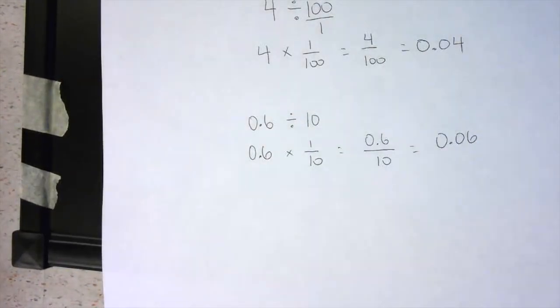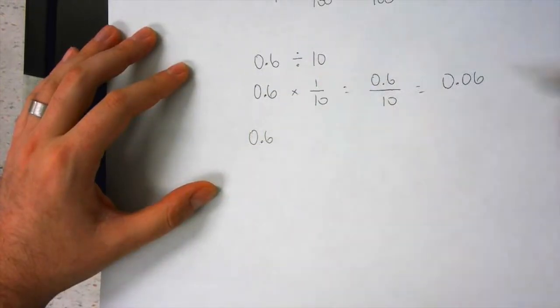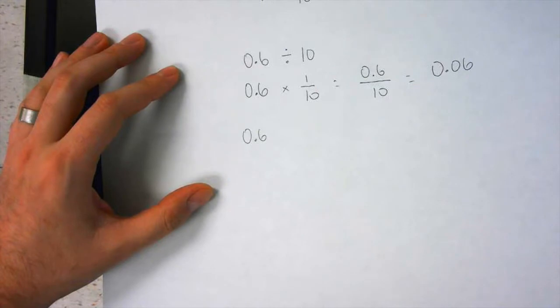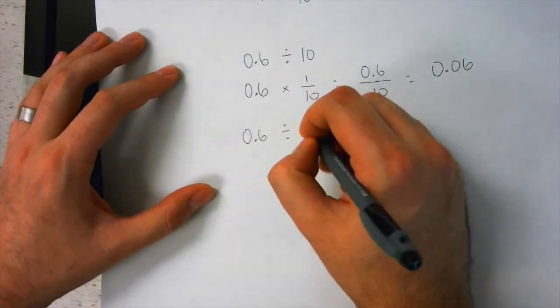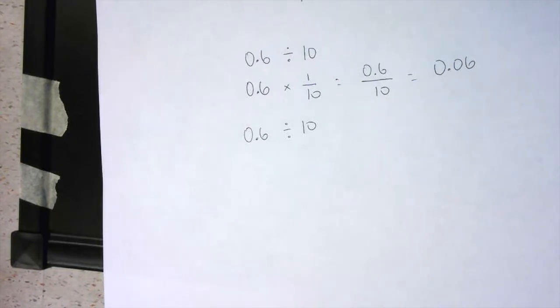Now you must be wondering how did this happen. Watch this. You ready for this one? 0.6, how can I make, so 0.6 divided by 10 is the question. How do I make 0.6 into 6? How would I make it 6?